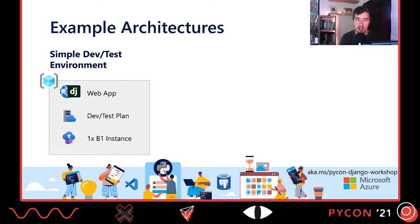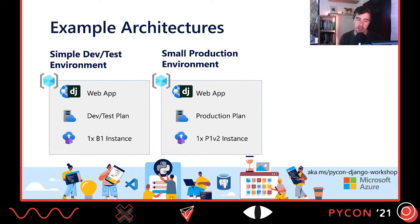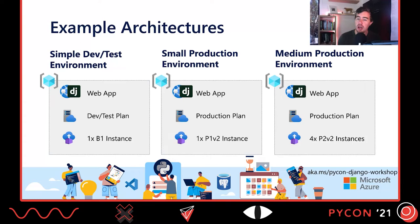For a small production environment, introduce the production plan, which gives you load balancing, custom domains, and the ability to install certificates. The smallest production environment is really a P1v1 or P1v2 — I'd recommend P1v2 for most Django applications. If you need to scale out, you can scale horizontally by adding more instances; just go into the plan, expand the number of instances to four, for example, and it will redeploy them and deploy the code automatically.